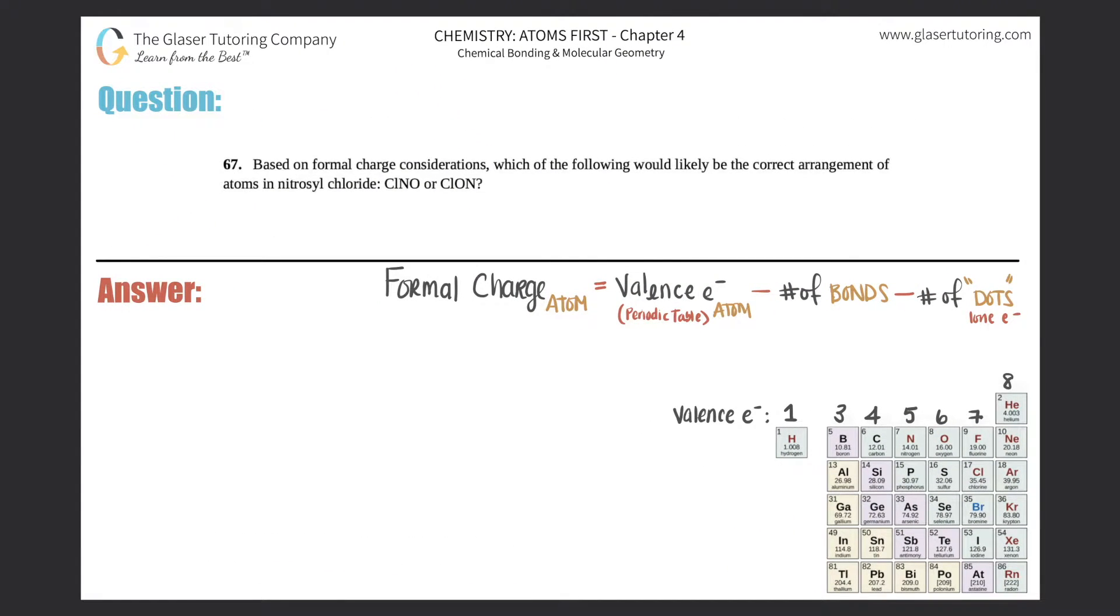Number 67. Based on formal charge considerations, which of the following would likely be the correct arrangement of atoms in nitrosyl chloride: ClNO or ClON?